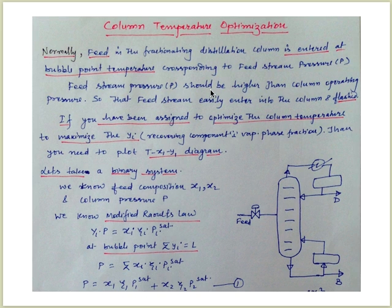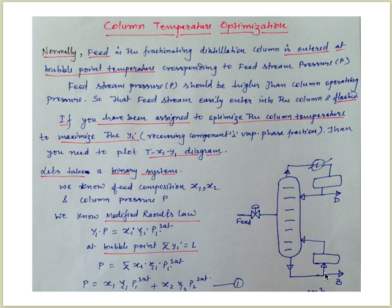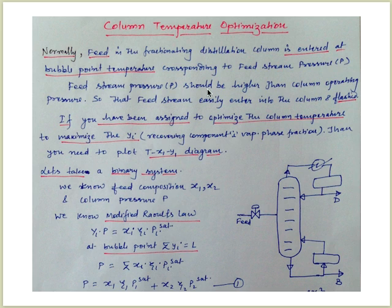For column temperature optimization, here is a pictorial representation: this is the feed entering the column, the top product goes to a cooler for condensing, and some portion is recycled. From the bottom, the liquid is heated and sent back to the column for further separation, and partially taken out as the bottom product — the heavier product — while the lighter product exits from the top. Normally, feed in a fractionation distillation column is entered at bubble point temperature corresponding to the feed pressure. The feed stream pressure should be higher than the column operating pressure so that the feed stream easily enters the column.